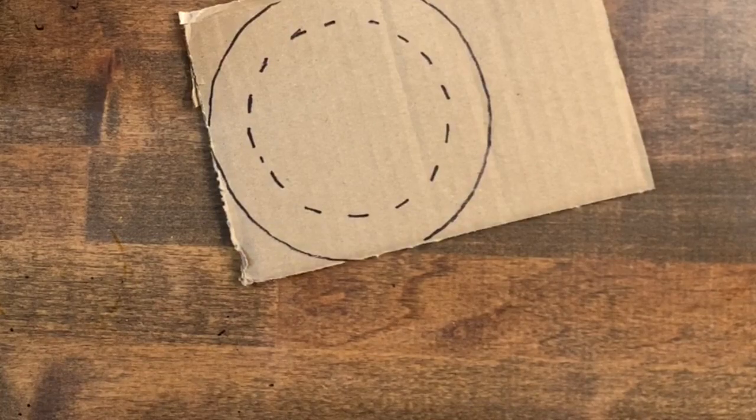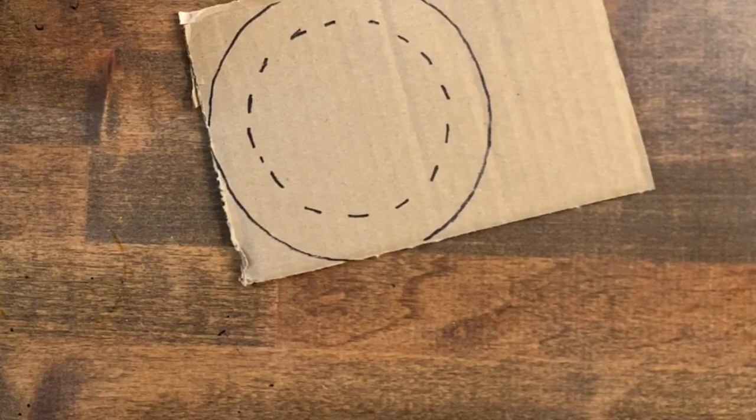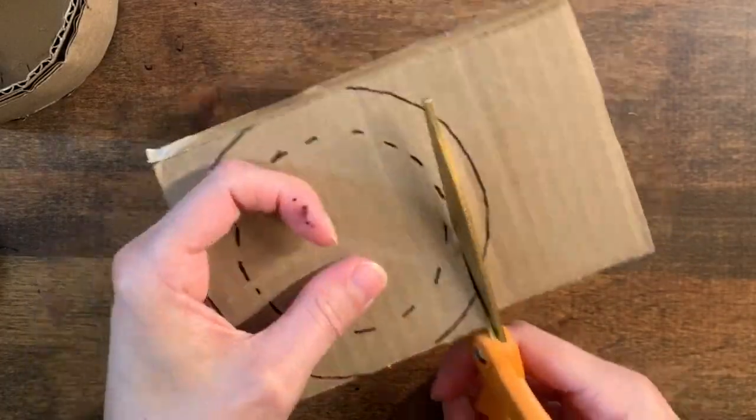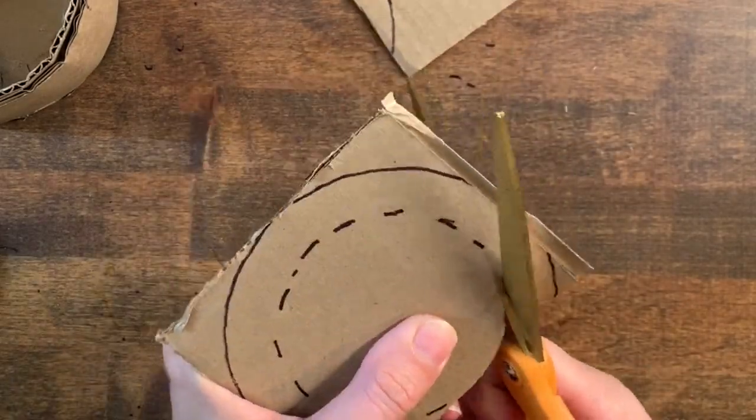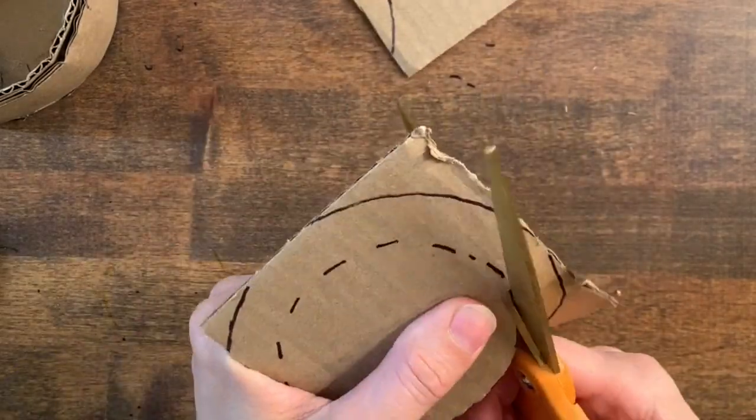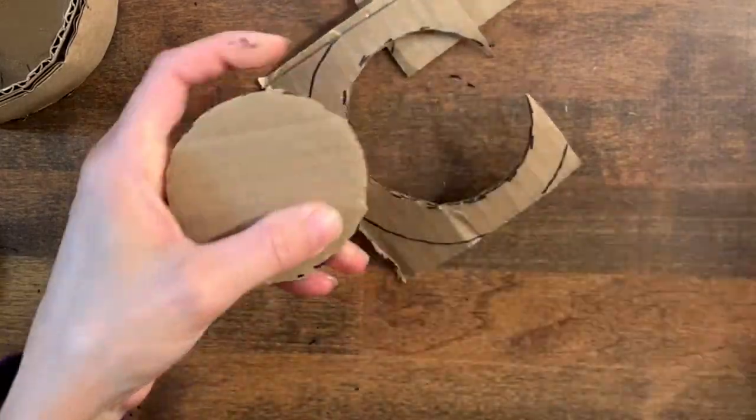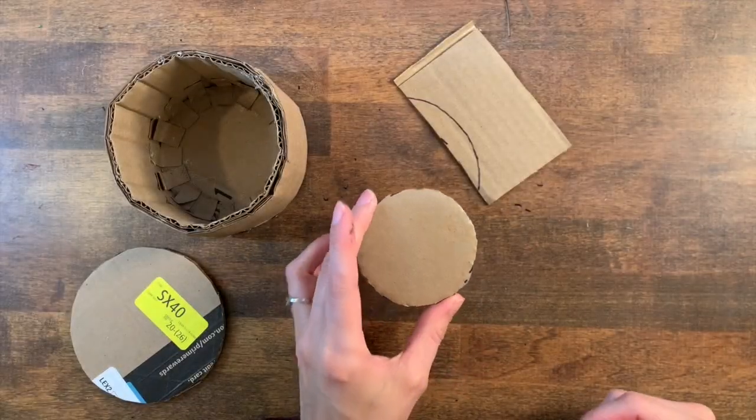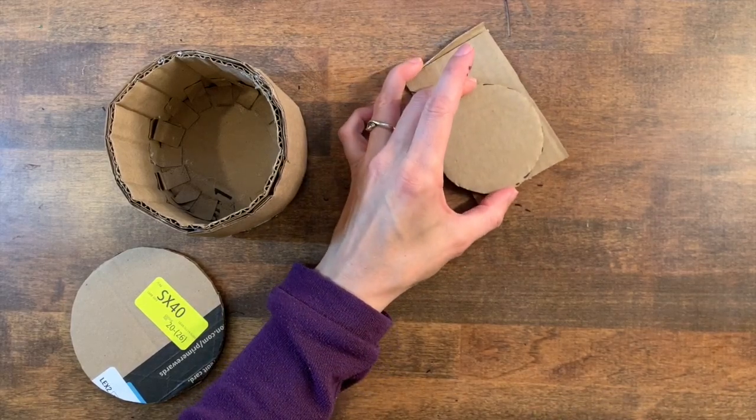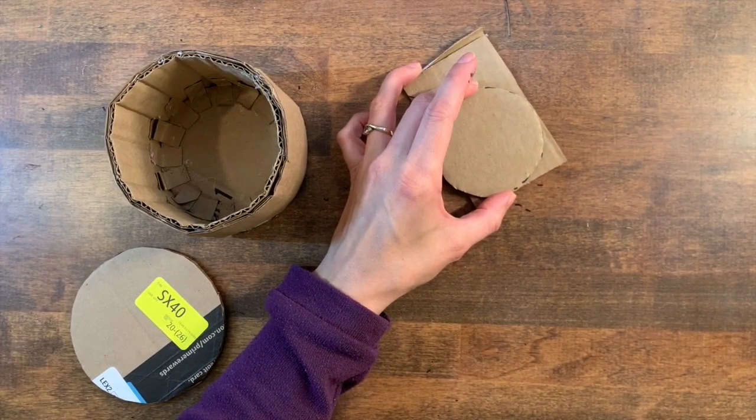Now instead of cutting out on the solid line, I'm going to cut out the dashed line. I'm going to need a second one of these, and this cardboard is too small, so I'll need to find another piece.